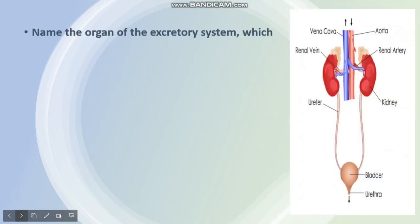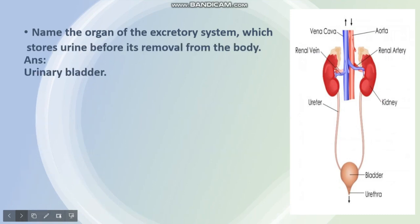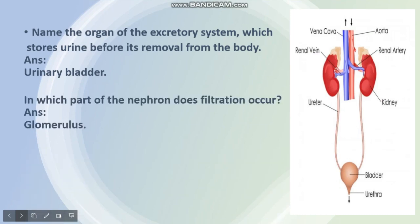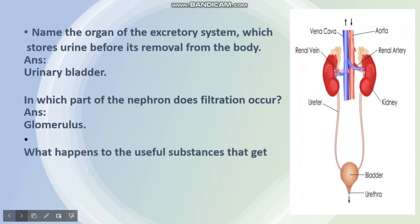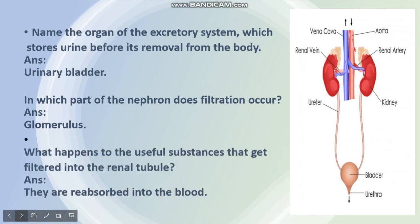Name the organ of the excretory system which stores urine before its removal from the body. The answer is the urinary bladder. In which part of the nephron does filtration occur? The answer is the glomerulus. What happens to the useful substances that get filtered into the renal tubule? The answer is they are reabsorbed into the blood.